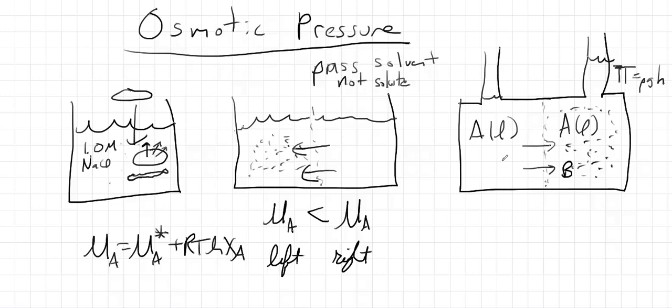Here we have A that's had its chemical potential decreased by having the impurity, but it's increased by having the pressure, and eventually those two effects will equal each other.